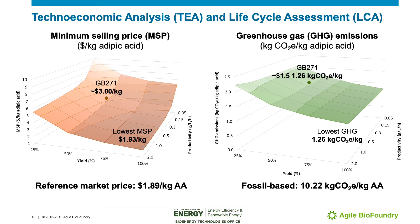This puts adipic acid produced by GB271, the best performing strain shown earlier, at about $3 a kilogram, and improving the yield or the productivity has the potential to bring that price closer to the reference market price for petroleum-derived adipic acid, which is about $1.89 per kilogram.